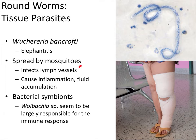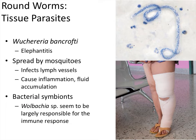This worm is spread by mosquitoes and infects lymph vessels. The mosquito bites someone and transmits the parasite, which crawls through the body into the lymph system, causing massive inflammation and fluid accumulation. Interestingly, recent research indicates it's not the worm alone causing the massive inflammation — it is a bacteria that lives on the worm, a symbiotic relationship. That bacterial symbiont is in the genus Wolbachia, a gram-negative organism, and our body responds very, very strongly to it.